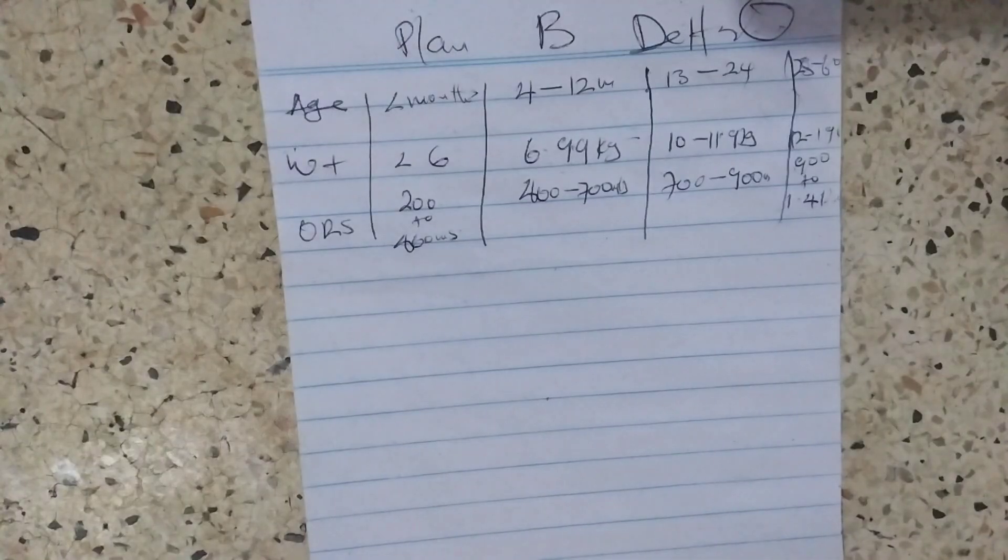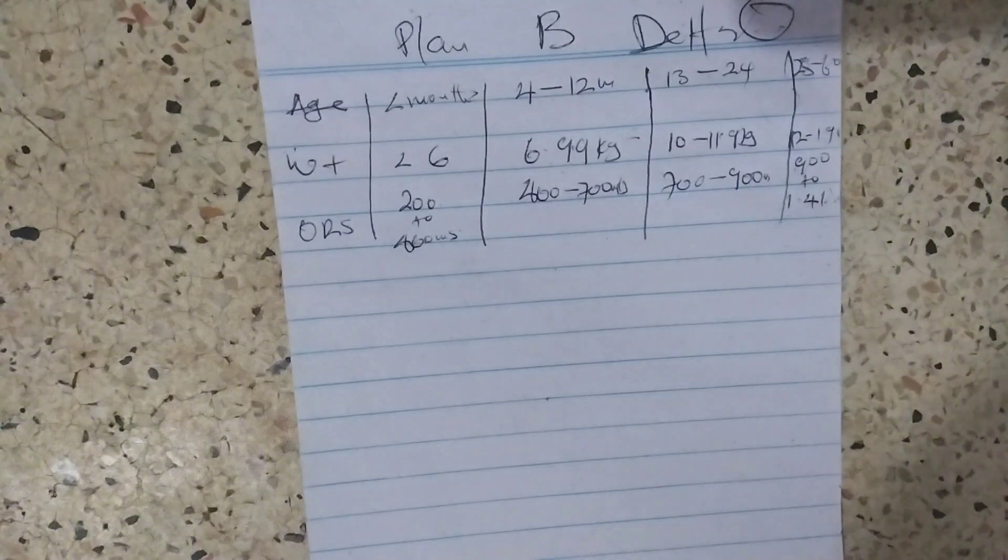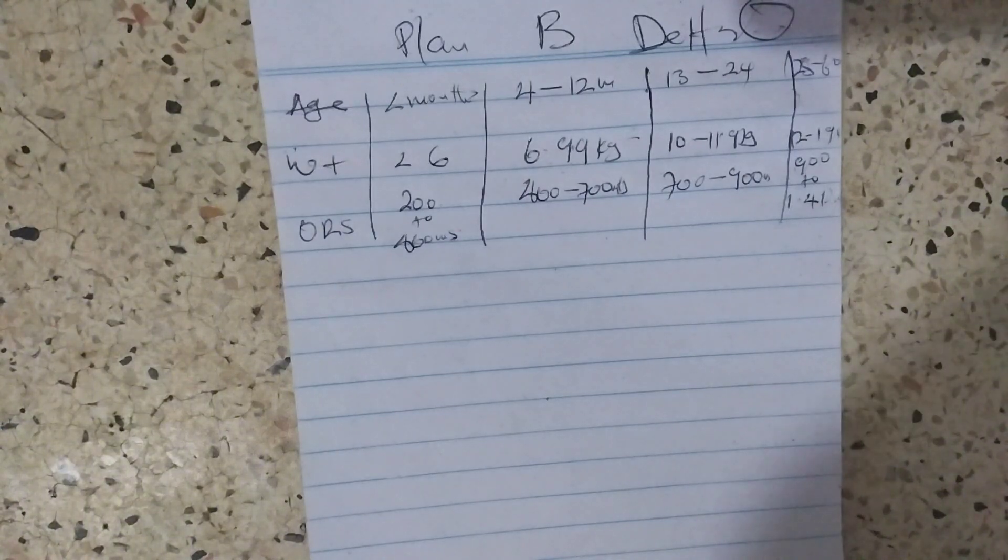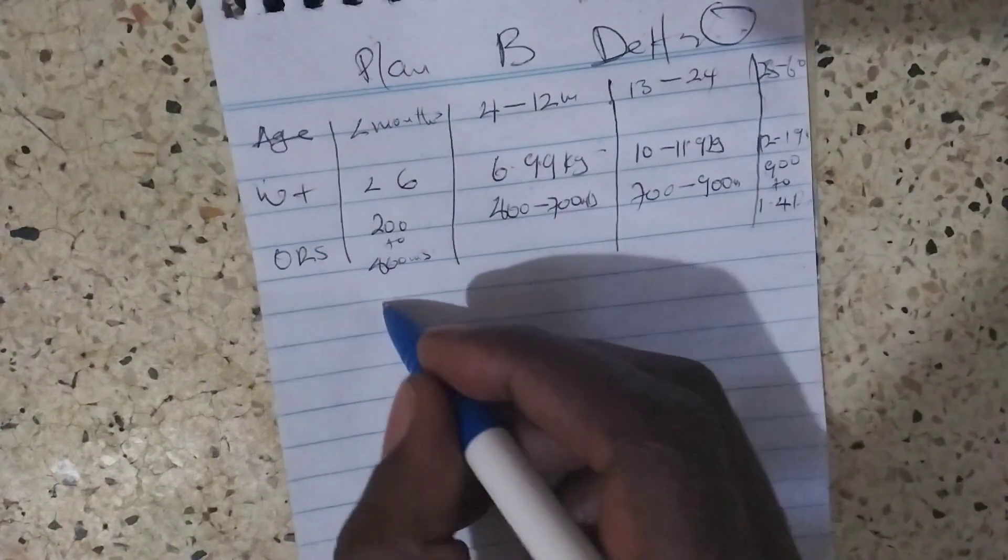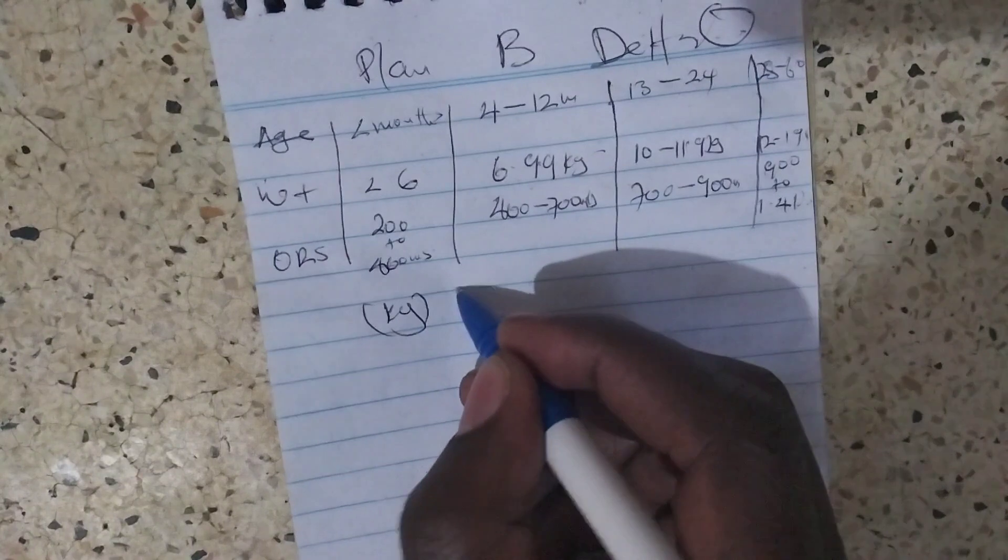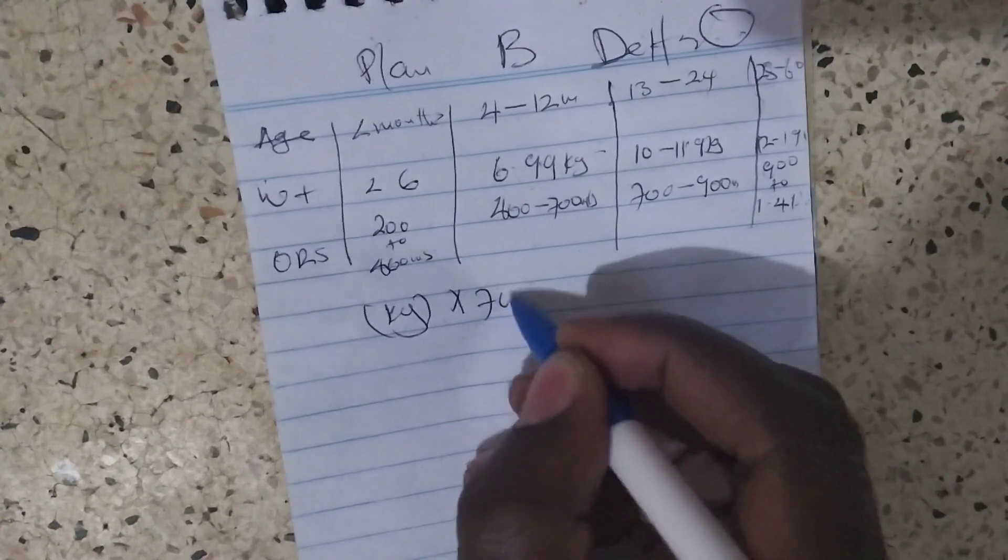If you don't know the weight of the baby, in case you have not taken the weight, you are going to use the age. The estimated value of the weight is six kilograms times 70 meals.